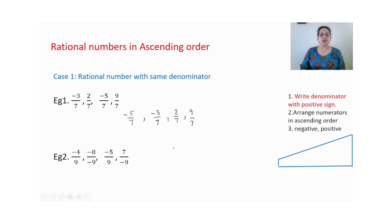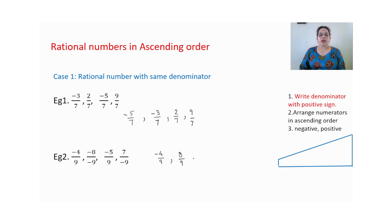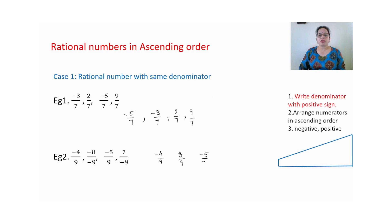Here we have two negative denominators, so one by one we will see. First one is minus 4 by 9 — denominator is already positive. Second one: when numerator and denominator both have negative signs, by the integer property, total number of negative signs are 2 (an even number), so the number will be positive — that is 8 upon 9. Third one is minus 5 upon 9, and the last one is 7 upon minus 9, which becomes minus 7 upon 9.